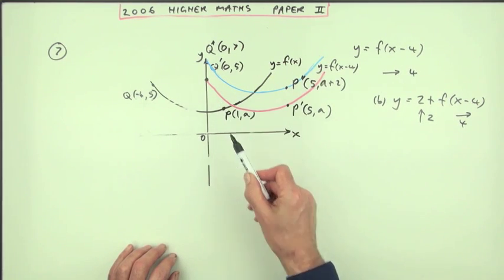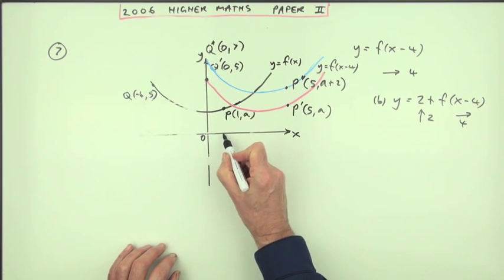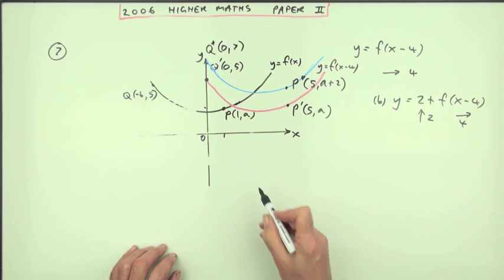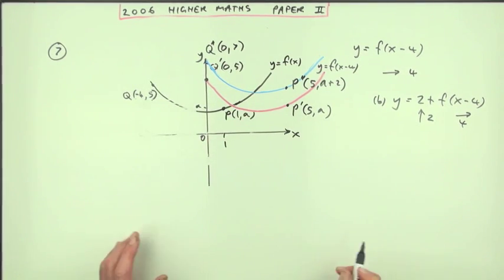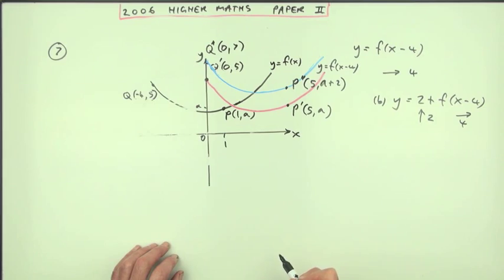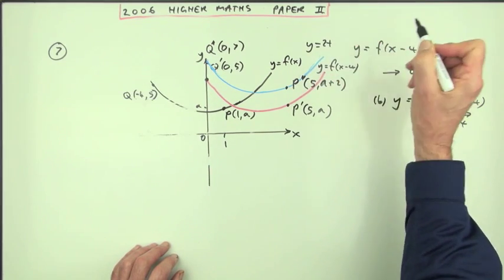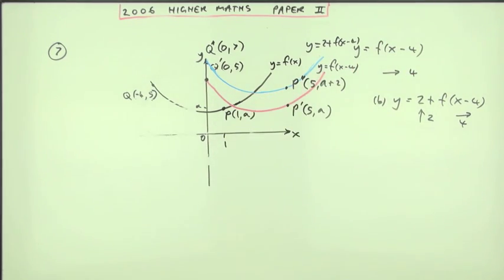And another thing you could have done instead of putting the coordinates beside the points would be to indicate them with little marks on the axis. So for point P you could have had a one there and an a there for instance, and that would be allowed. But I think you're better off having the coordinates written beside the point. One last thing, what was that? That was y equals 2 plus f of x minus 4. Quite a busy little diagram though.